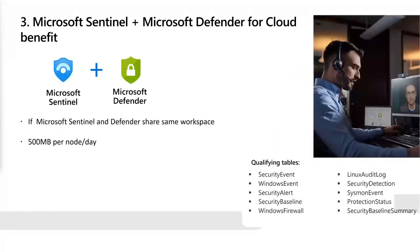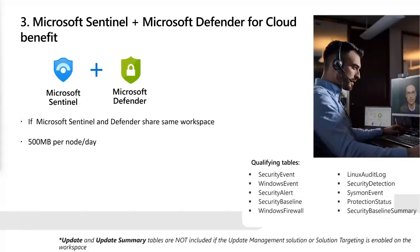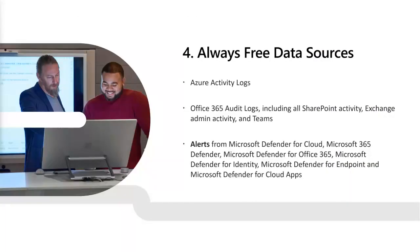The Microsoft Sentinel and Defender for Cloud benefit applies if these two solutions share the same log analytics workspace. The benefit here is 500 MB per node per day and the qualifying tables are listed on the screen. Additionally, updates and update summary tables are not included if the update management solution or solution targeting is enabled on the workspace. Always free data sources include Azure activity logs and Office 365 audit logs. For alerts from first-party products — Microsoft Defender for Cloud and Microsoft 365 Defender — it is the alerts that are free, not the logs. The alerts are not billable, but the logs are billable.